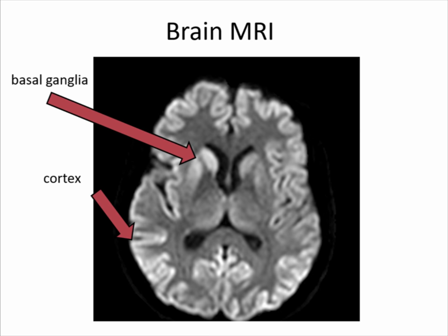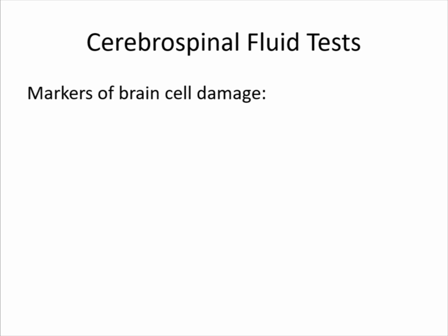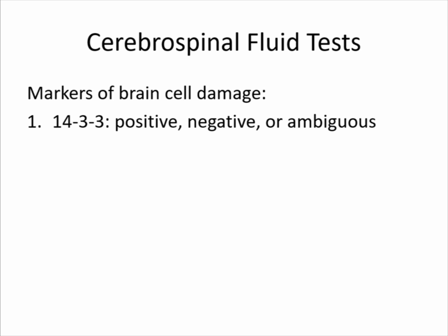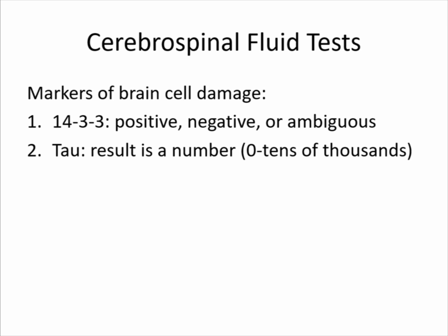There are spinal fluid tests that serve as markers of brain cell damage. One is 14-3-3, reported as positive, negative, or ambiguous. Another is total tau protein, reported as a number — the higher the number, the more suggestive of CJD it can be. But these are only markers of brain cell damage, so they can be elevated in other conditions like seizures, MS, brain tumors, or head injury. They're not very specific for prion disease itself.